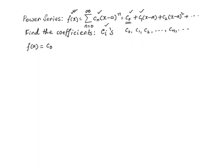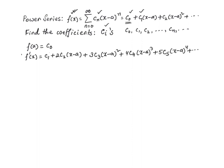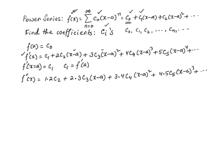Now let's take the first derivative. We evaluate the first derivative at x equal to a. All the remaining terms go away, giving us c one. So c one equals f prime of a.